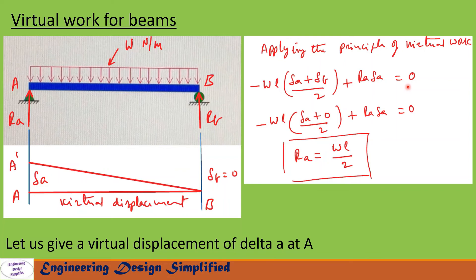The negative sign is because w is acting in the downward direction and delta_A is given in the upward direction. The positive sign for R_A is because R_A is acting upward and delta_A is also given upward. In this equation, delta_B equals zero. After substituting delta_B equal to zero and simplifying, we get reaction at A: R_A equals wL by 2.